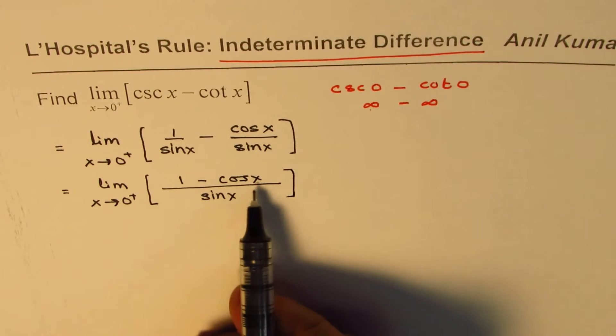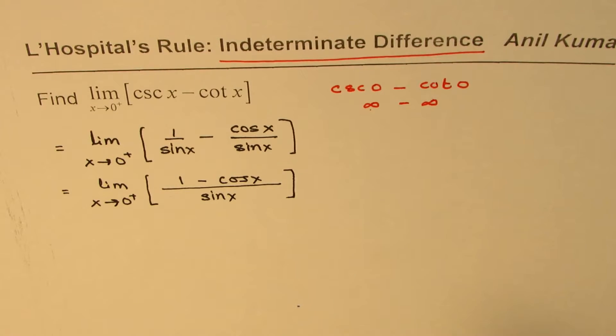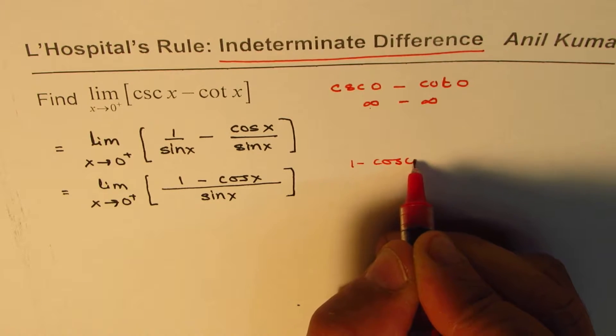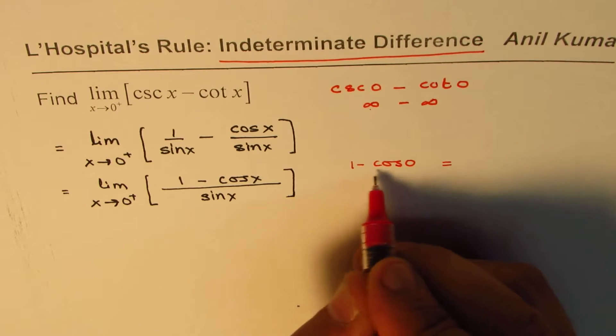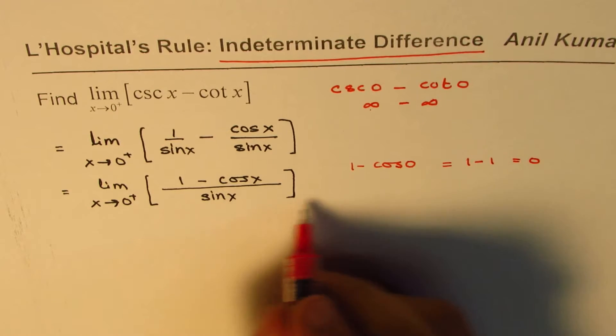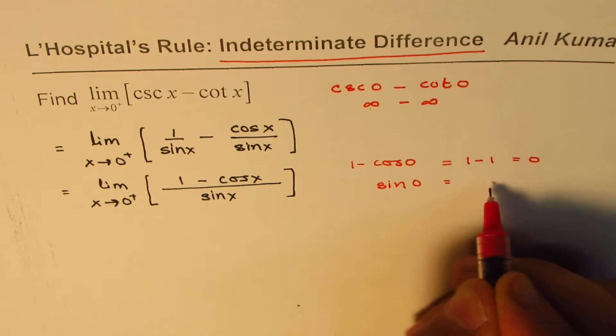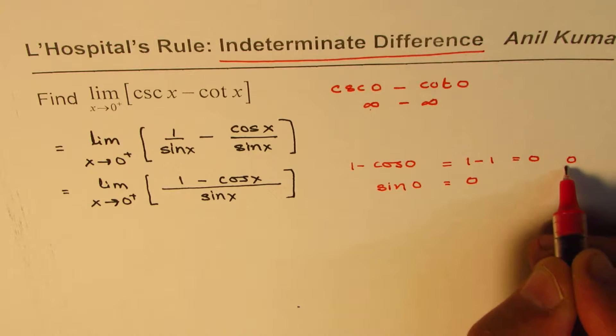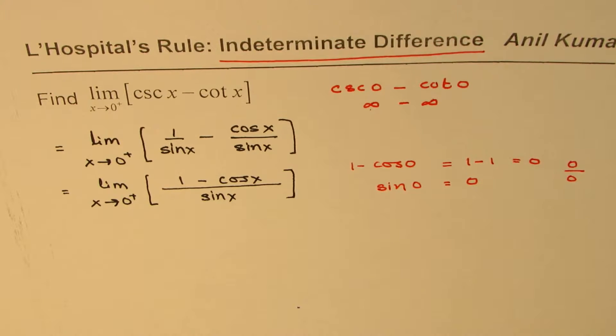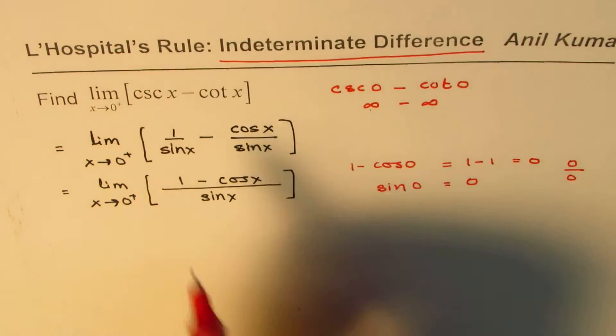Now here if I substitute 0, what do I get? 1 minus cos x means cos 0 will give me 1 minus 1 which is equal to 0. As far as sine x is concerned, sine 0 is equal to 0. So we have 0 over 0. That's the indeterminate form, right? So we can apply the L'Hôpital's rule.